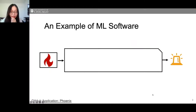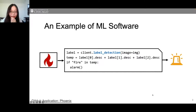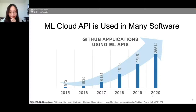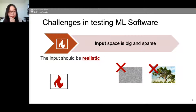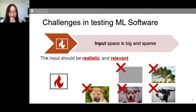Using machine learning APIs is straightforward. For example, a fire alarm application uses Google's label detection API to classify an input photo, storing the top three labels in the description field and generating a warning if any include the keyword 'fire'. A growing number of applications incorporate ML APIs, making effective testing urgent. There are unique challenges: first, the test input space is big and sparse. Randomly generated or mutated images don't work as they don't reflect realistic inputs.